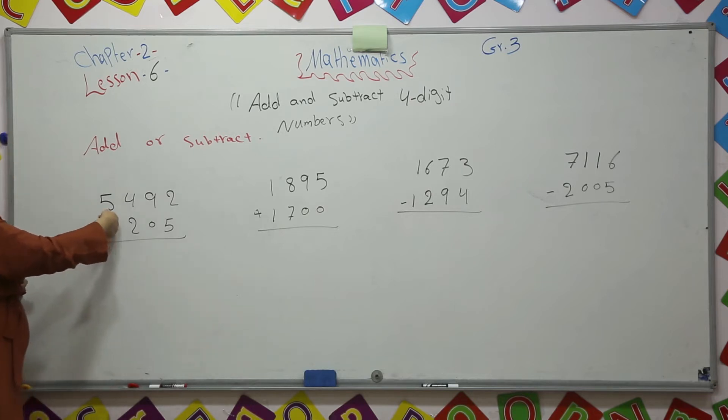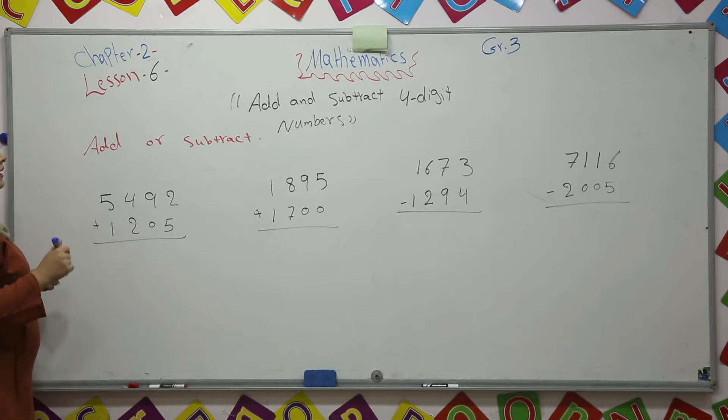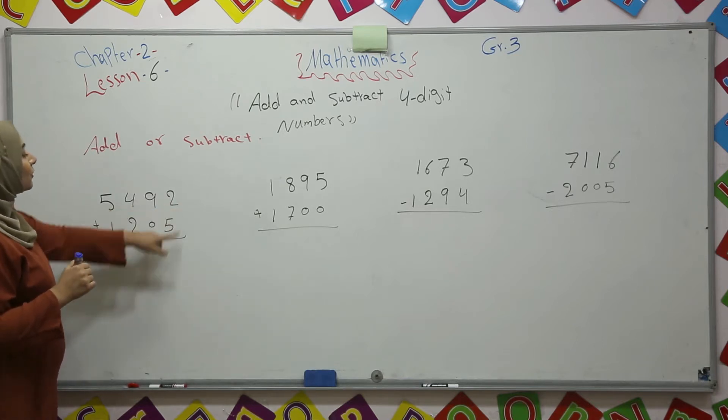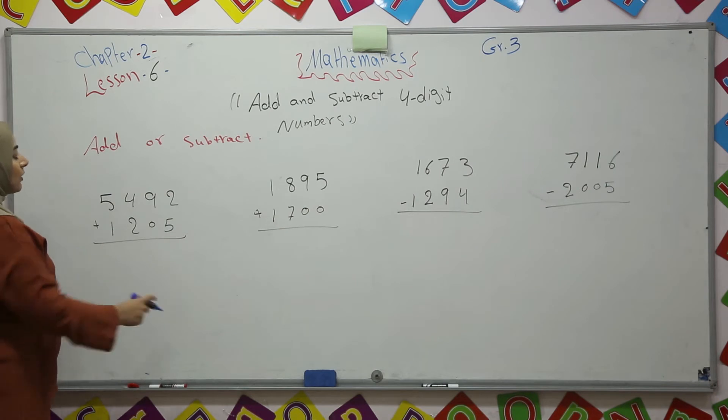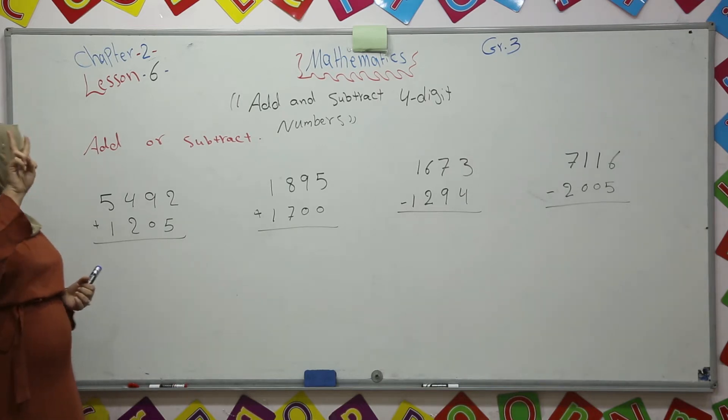We have 5,492 plus 1,205. Let us add them. We want to add two numbers together. Every time we should start from ones. 2 plus 5. The greater number in your mind and the smaller number in your hand. 5 plus 2, 5, 6, 7. So it is 7.